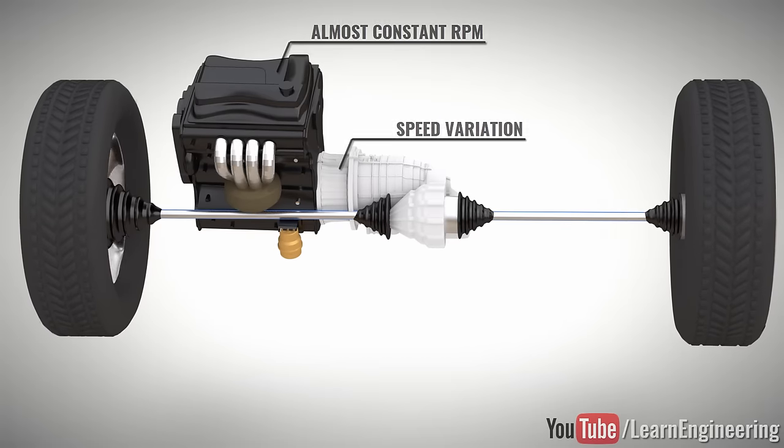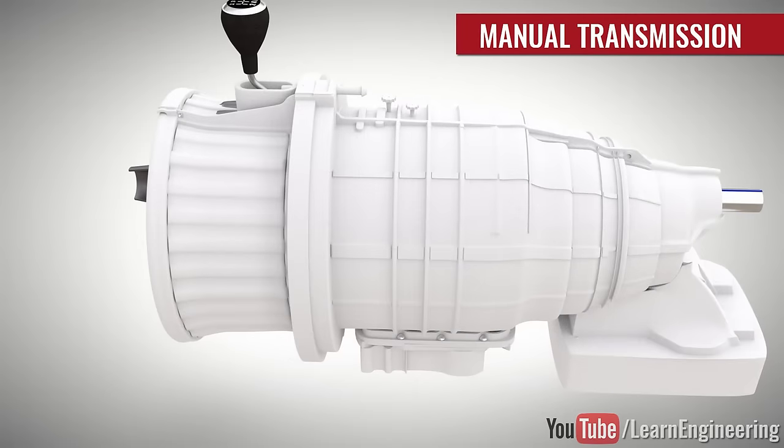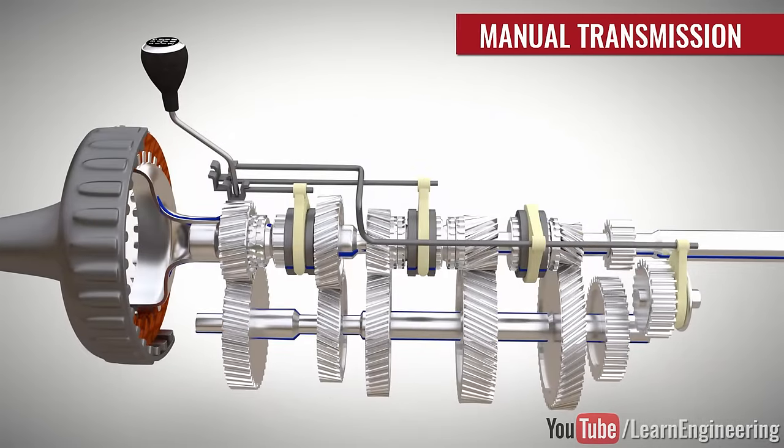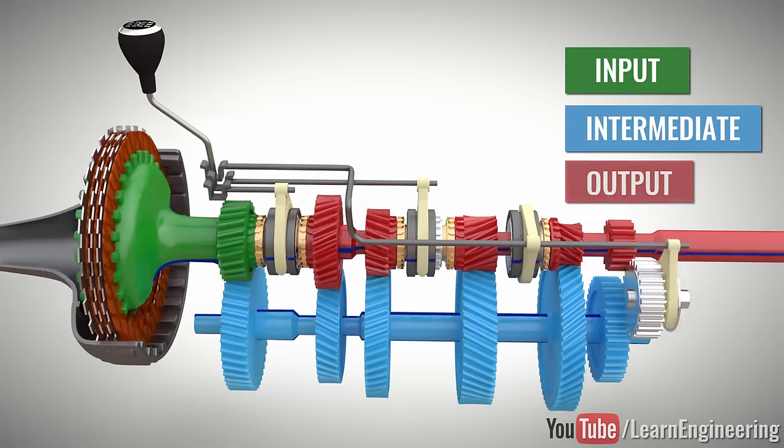First, let us see how the speed variation is achieved in a manual transmission. A manual transmission is a collection of gear pairs. It has three sections: input, intermediate shaft, and output.